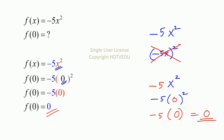So what is our point? Our point is: x comes first. When x equals 0, y is equal to 0. The function is negative 5 x squared.